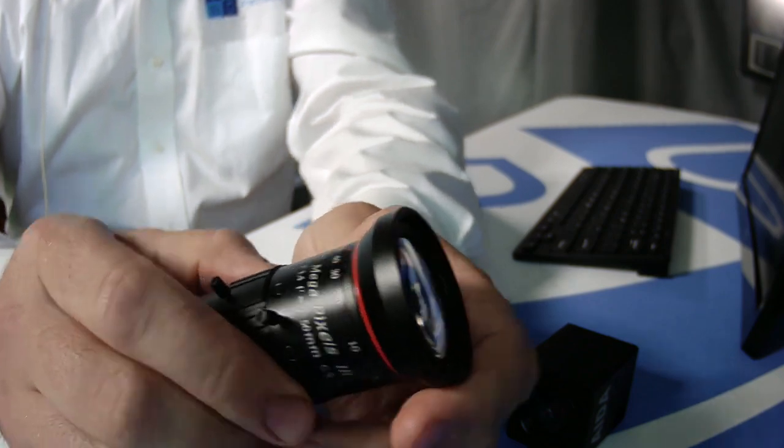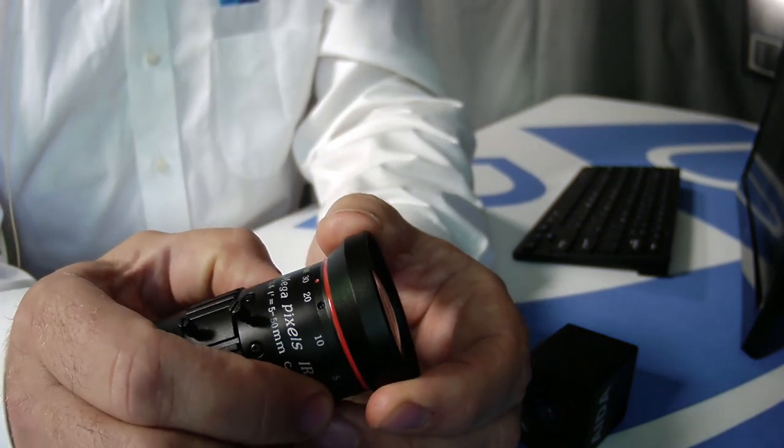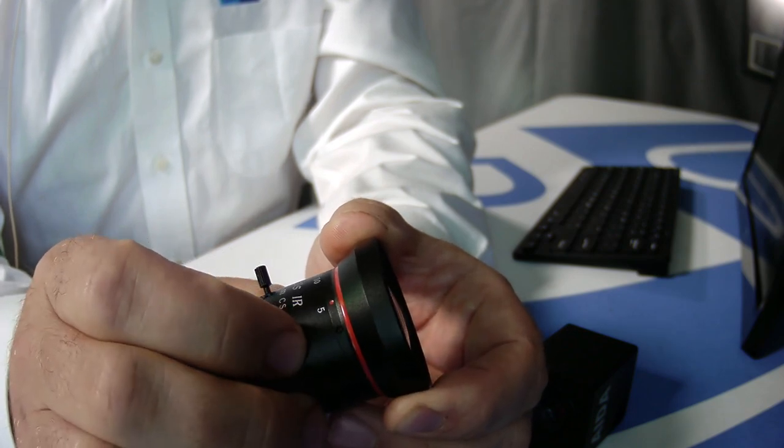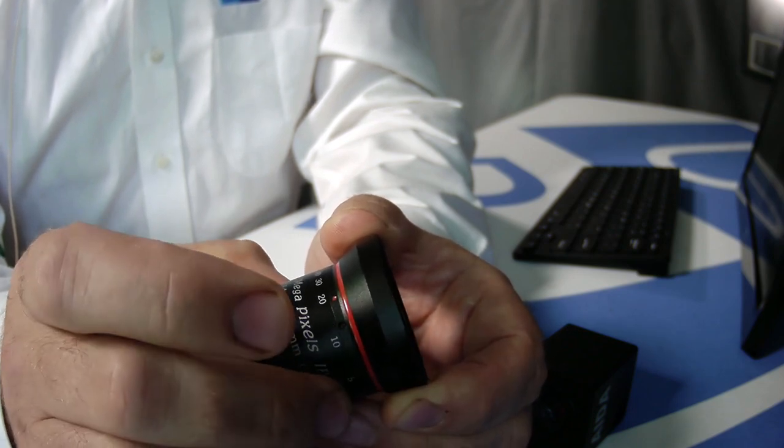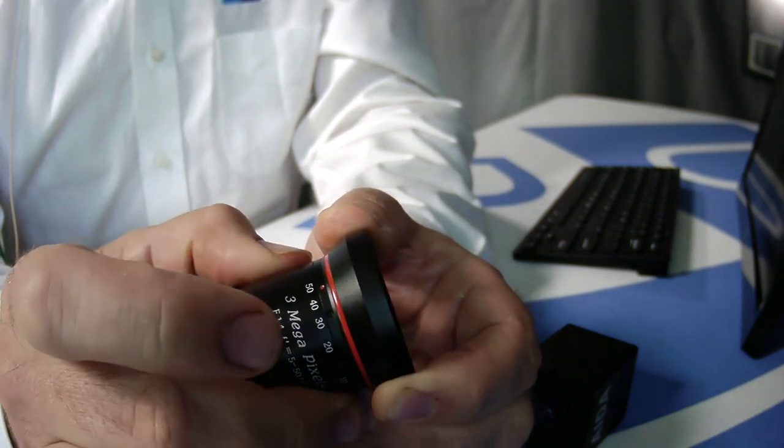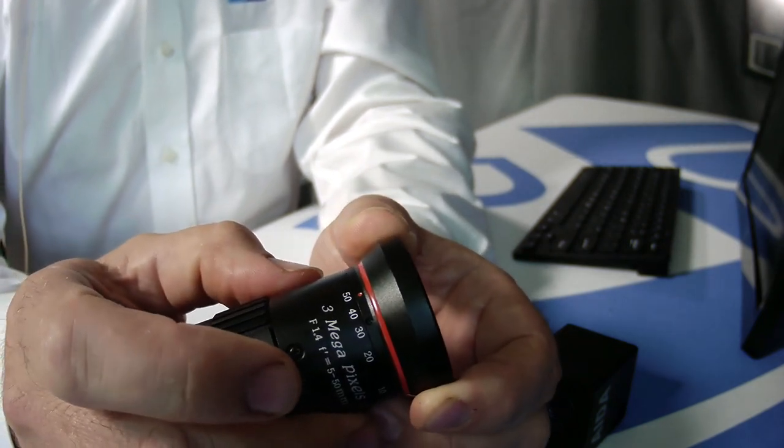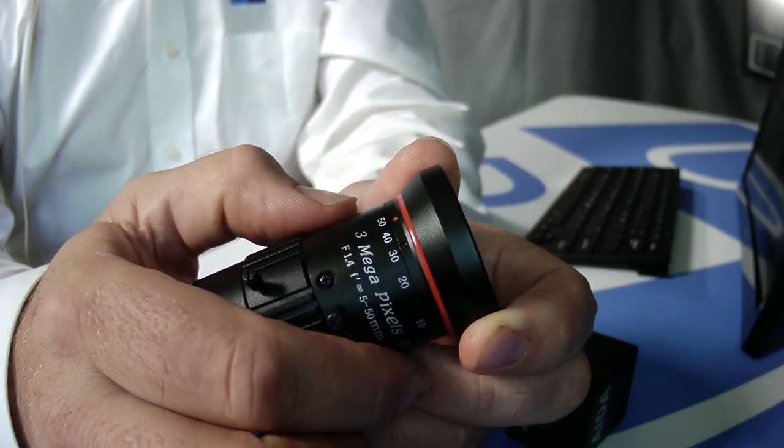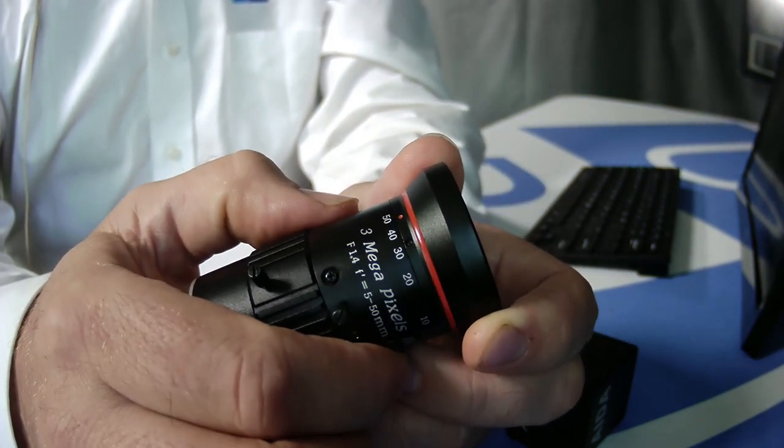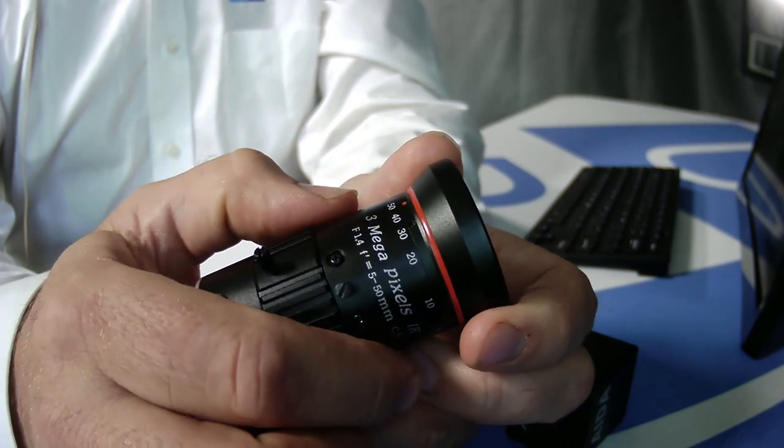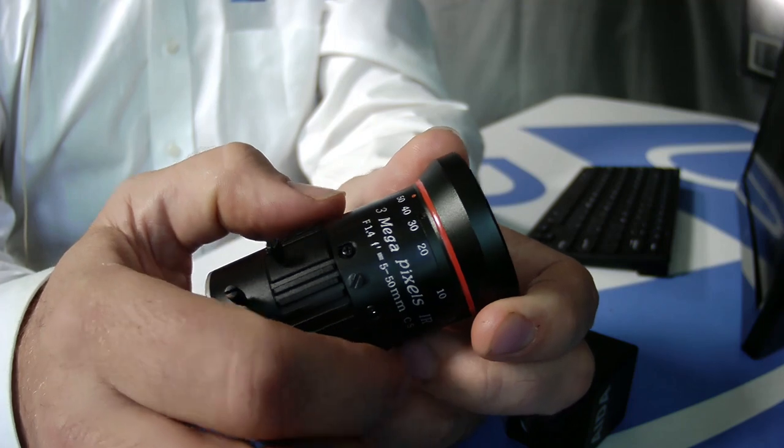Right at the front of the lens we've got the control for its millimeters. This lets us adjust it from 5 to 50, and this actually gets us quite a high range. 5 to 50 is quite a lot. 50 gets us a really zoomed in shot. So with this one lens we're able to cover quite a lot of different shots.